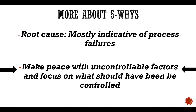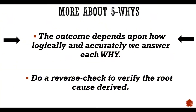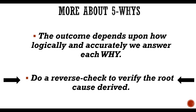To achieve that, while answering the questions of why, you should make peace with uncontrollable factors and focus on what should have been controlled. For example, if there was a system outage, your final root cause cannot be that there was a tornado or hurricane — that is not controllable — but rather that you did not have a business continuity process to handle such situations. Once you arrive at the final root cause, do a reverse check to ensure that the sequence and causality make sense.